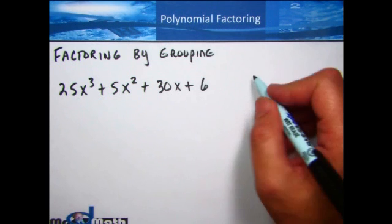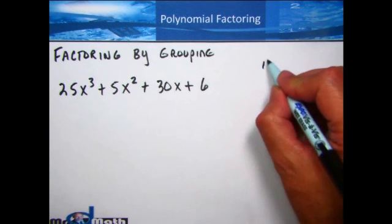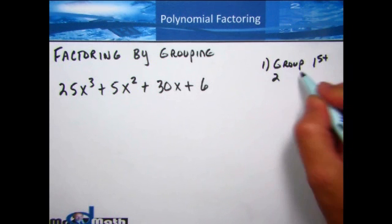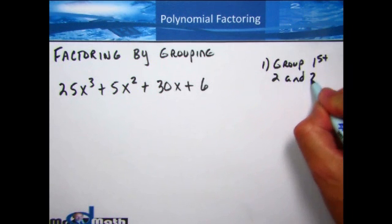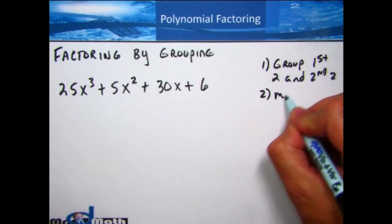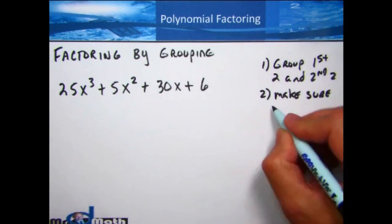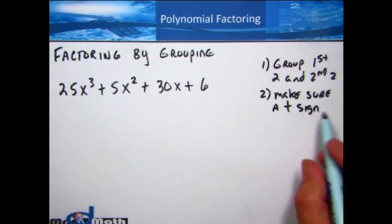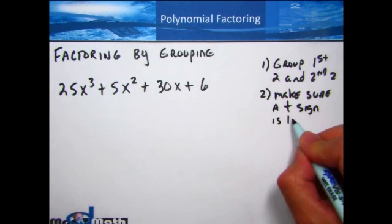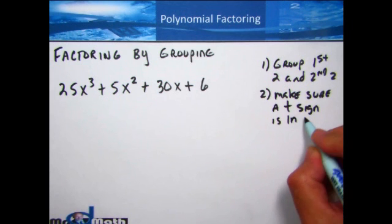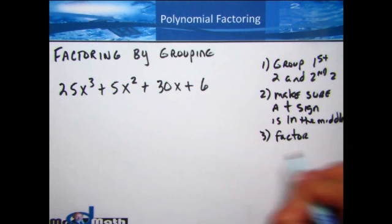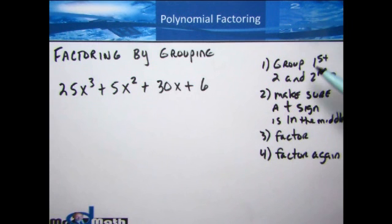There are a few steps. Step one: group the first two and second two terms. Step two: make sure a plus sign is in the middle — that is absolutely essential. Step three: factor. Step four: factor again. You'll see exactly what I mean by that in the examples.